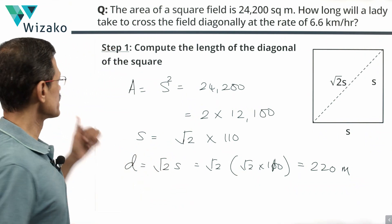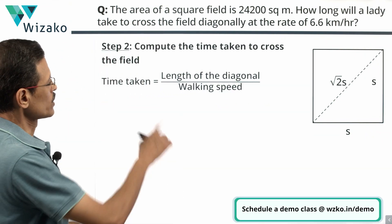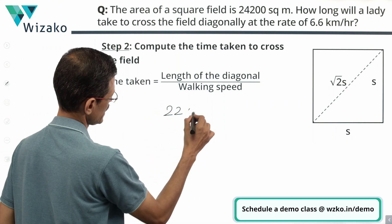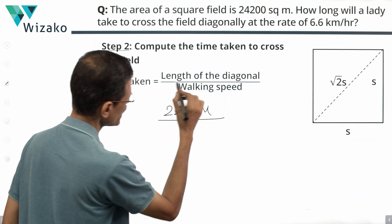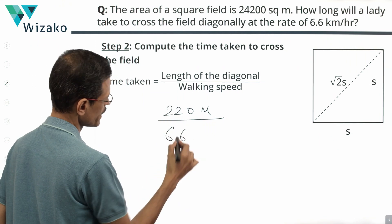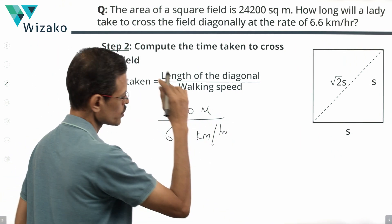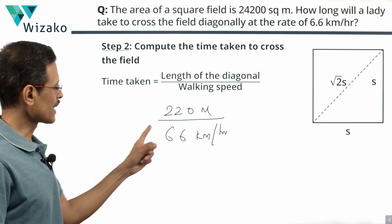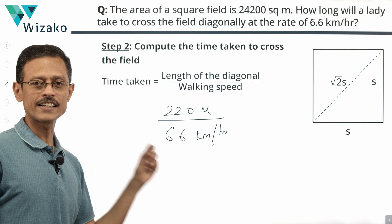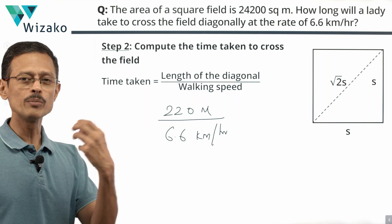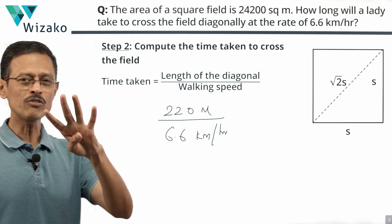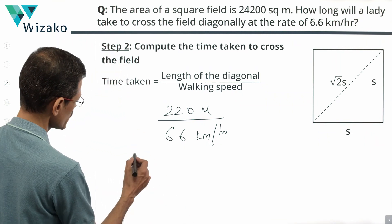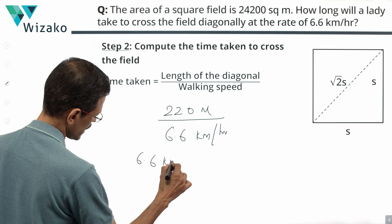How do you compute time? Time equals distance divided by speed. What's the distance she's walking? She's walking 220 meters. What is the speed? She's walking at 6.6 kilometers per hour. Obviously we can't work directly. We need to make a conversion of units. I'm going to convert 6.6 kilometers per hour into meters per minute, because I found four of the answer options having a minute in it. So let's go with that and see whether it makes sense.